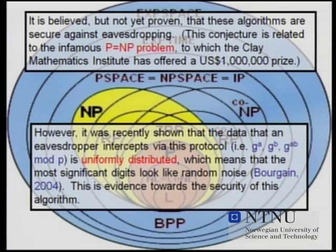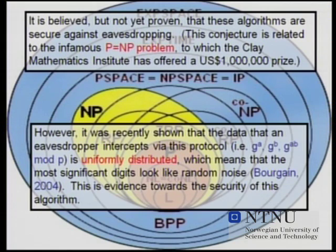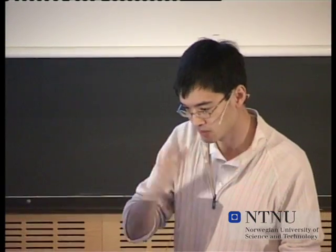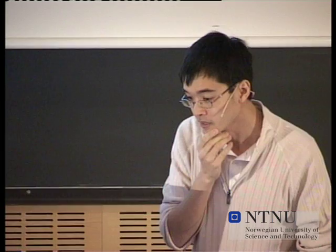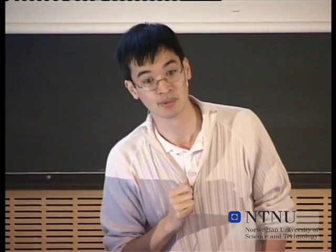It's believed but not proven that these algorithms are secure. This is related to a very famous problem in mathematics called the P equals NP problem. The Clay Mathematical Institute has famously offered seven Millennium Challenge problems, each worth a million dollars. Seven problems — one is solved, six are open — and one of them is the P equals NP problem.